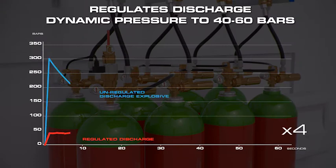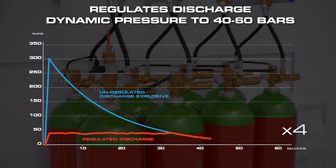An unregulated discharge releases a violent high-pressure wave that can damage a building structure if not properly ventilated. But the InterX pressure reducer controls the outlet to a dynamic pressure of just 40 bar.